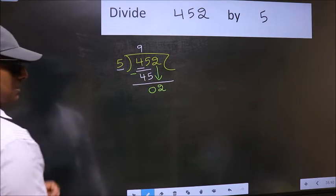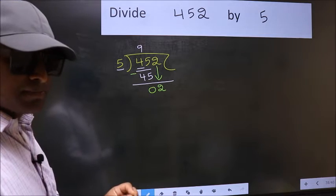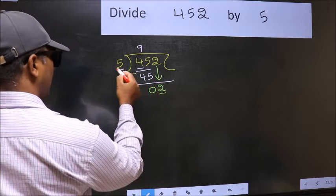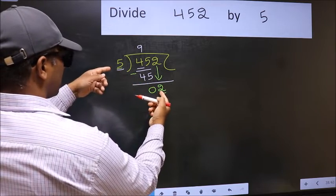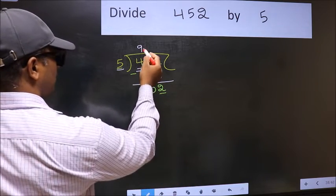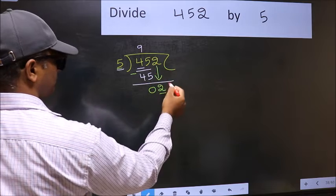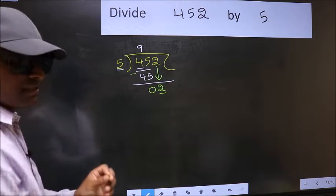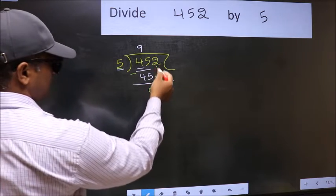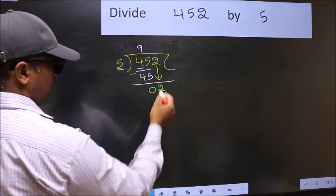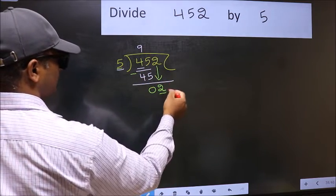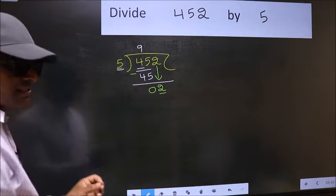After this step, the mistake happens. And the mistake is this. Here we have 2 and here 5. 2 is smaller than 5. So what many do is they directly put dot and take 0. Which is wrong. Why is it wrong? Because just now you brought this number down. And in the same step, you want to put dot and take 0. Which is wrong.